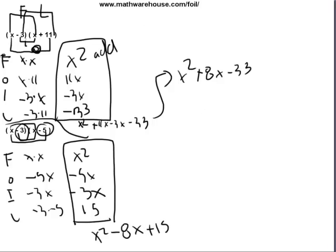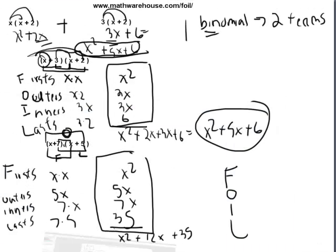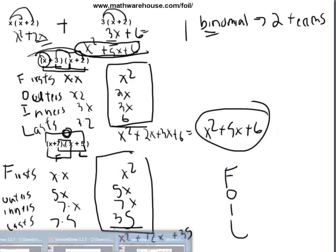So the only thing to keep in mind when there's a negative sign, you do include that, right? It's negative 3 times x. So now let's look at some special cases of foiling.